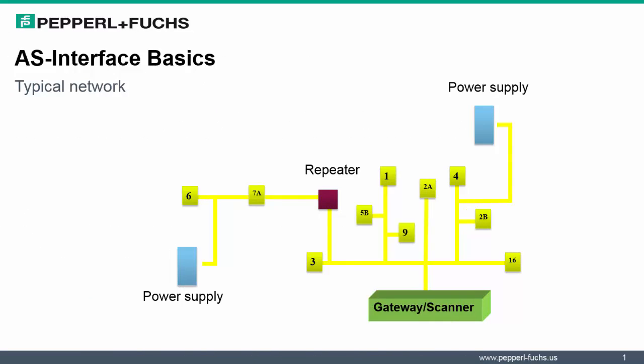Here we have a typical arrangement of an AS Interface network. Note, it consists of all the main categories that make up the AS Interface system, starting with a master, which is a gateway or scanner, having a power supply and repeaters associated to the infrastructure, and the number of IO slaves, represented as half or full addresses.